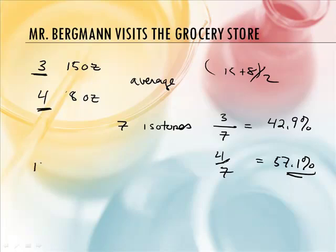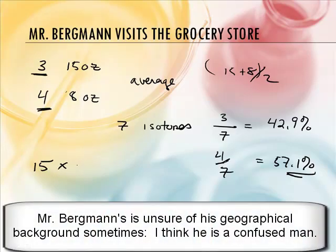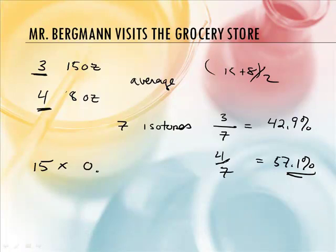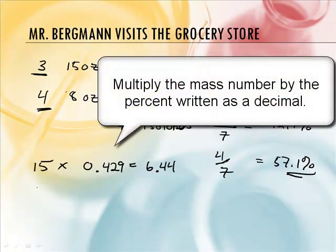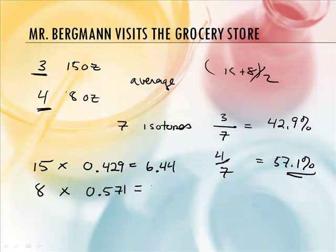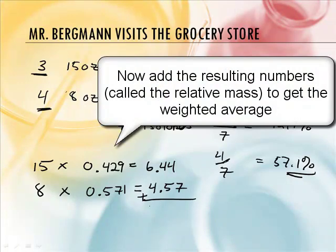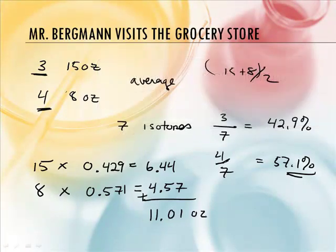So 15 times the percentage as a decimal — that's 0.429. So 15 times 0.429 equals 6.44. And then 8 ounces times 0.571 equals 4.57. We use it as a decimal, not the actual percentage. And we add those two numbers together — 6.44 plus 4.57 — and we get 11.01. So the average mass of the cans of tomato sauce we have would be 11.01 ounces. That's a weighted average.